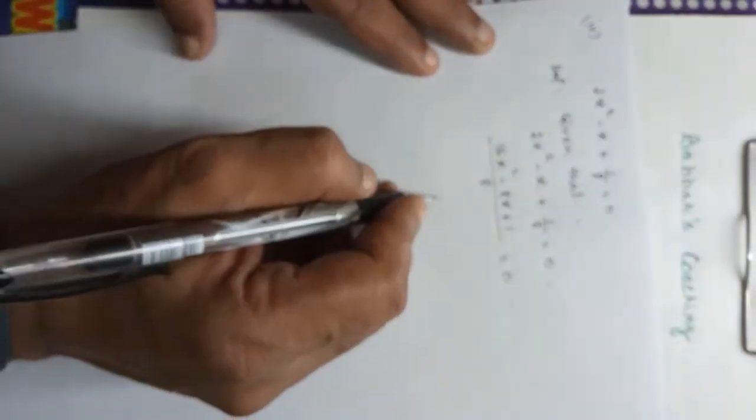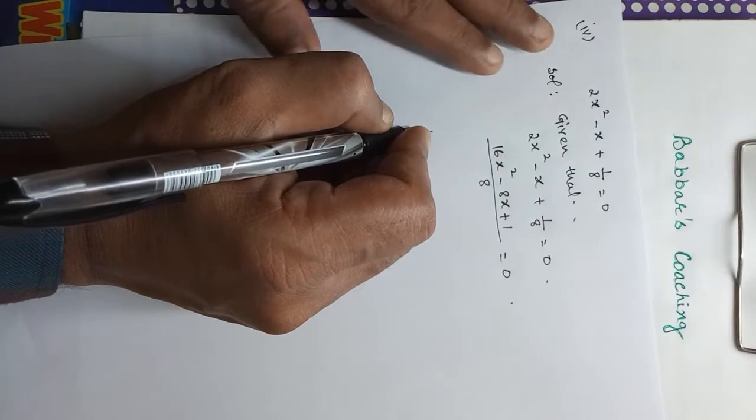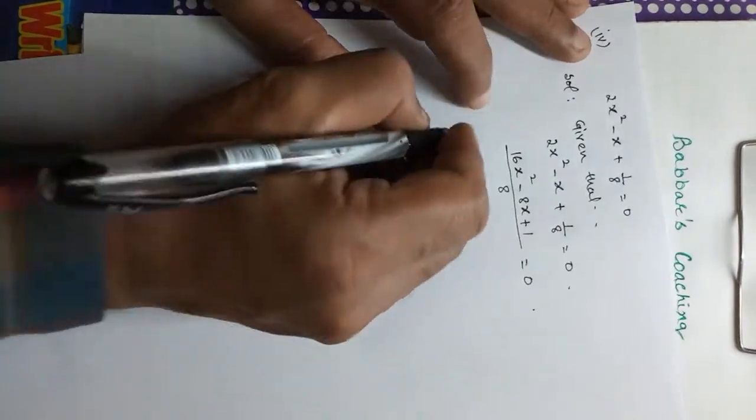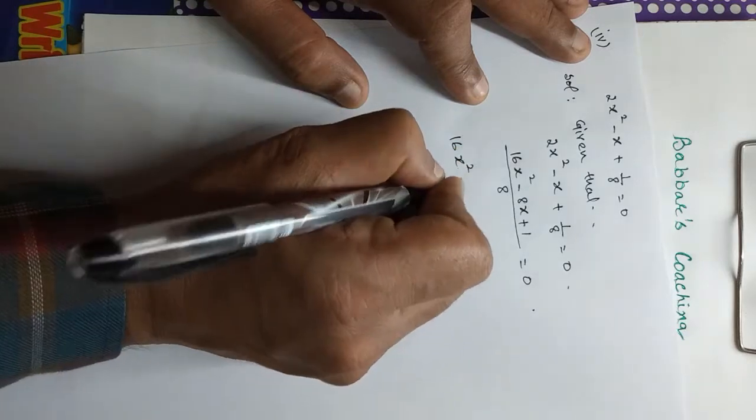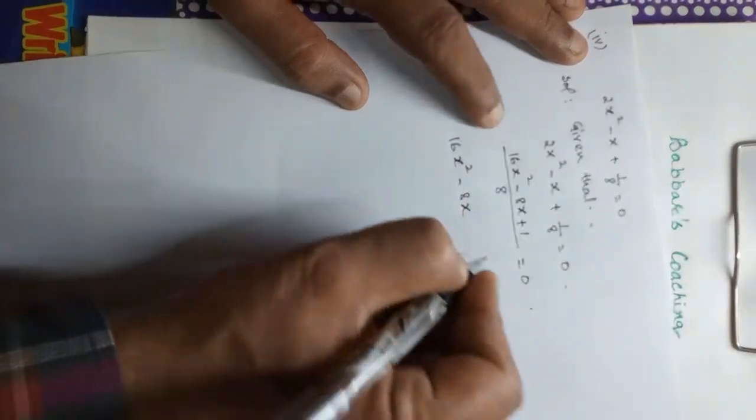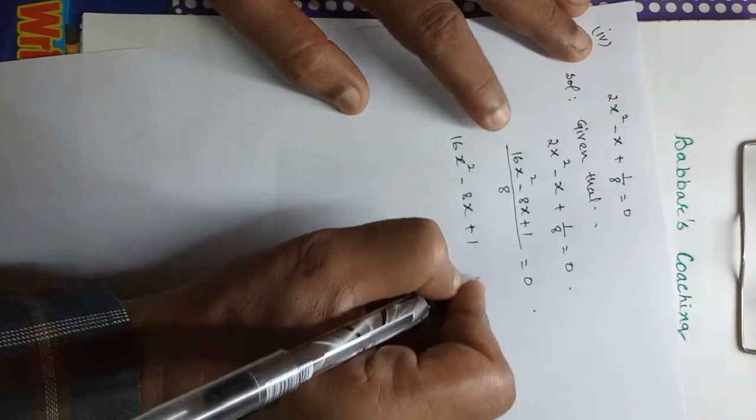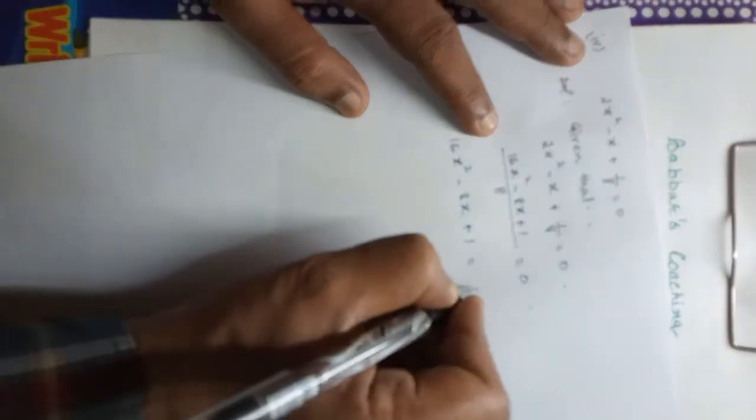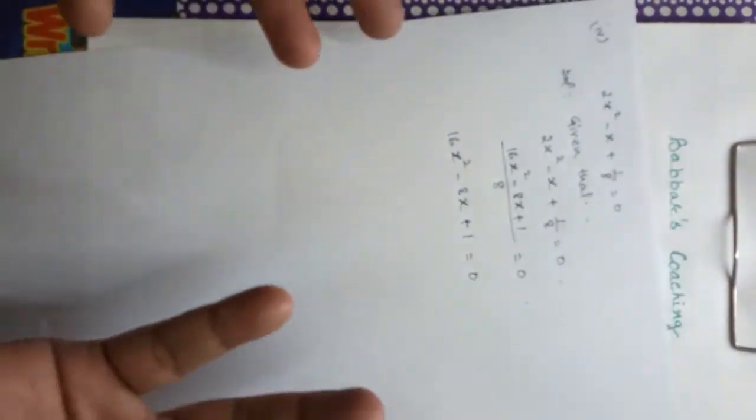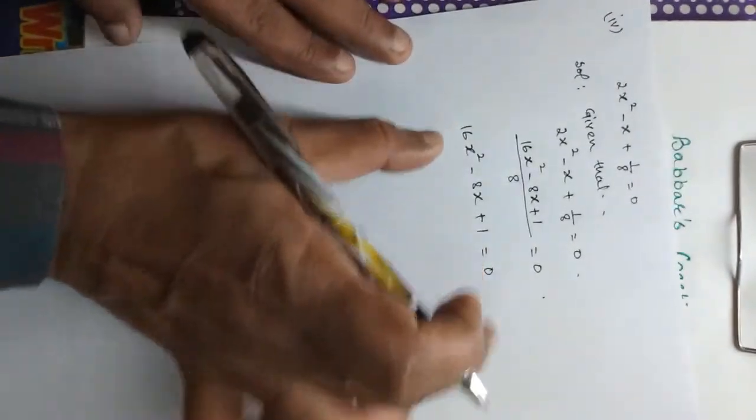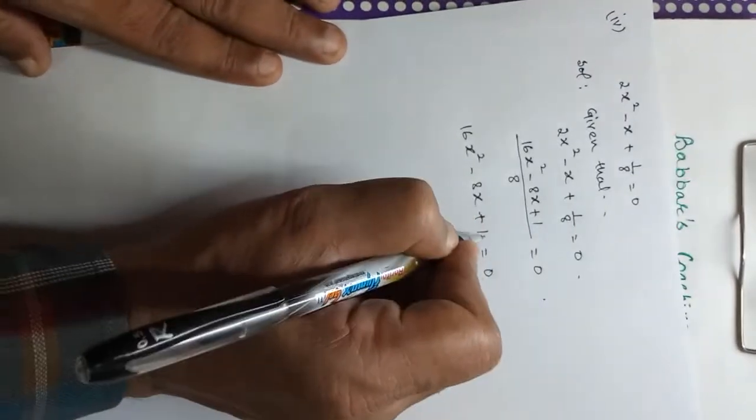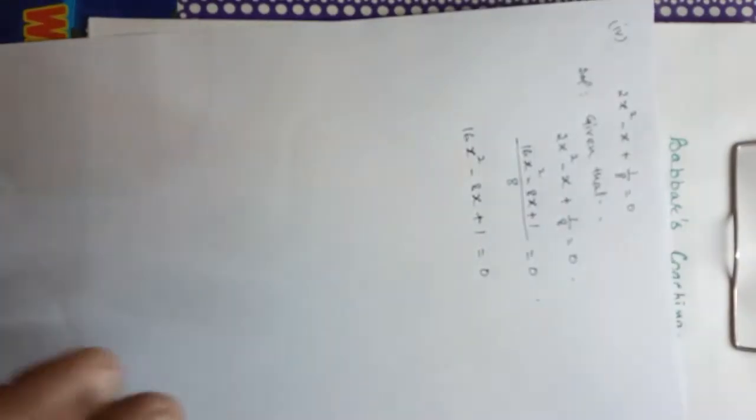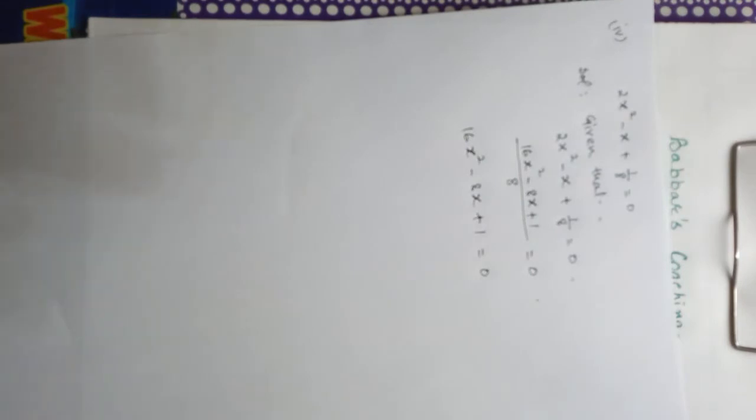We will write the problem. So this will be 16x square minus 8x plus 1 is equal to 0. If this 8 is equal to 0, this means that this is our equation. 16x square minus 8x plus 1 is equal to 0. So now we have a quadratic equation.